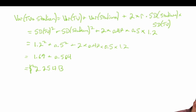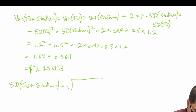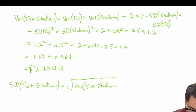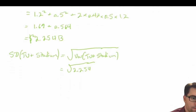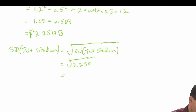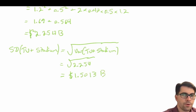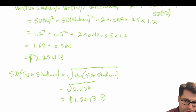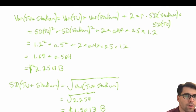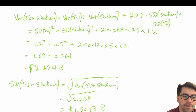From there we can calculate our standard deviation. The standard deviation of TV plus Stadium equals the square root of the variance of TV plus Stadium, which is the square root of 2.254, giving us 1.5013 billion dollars. So we have used our correlation coefficient to calculate the new standard deviation when the two variables have a correlation between them.